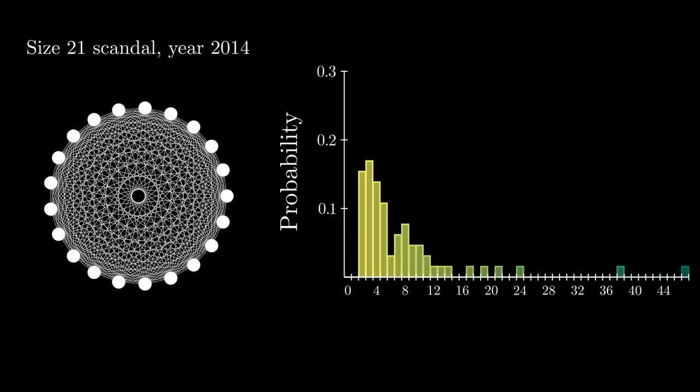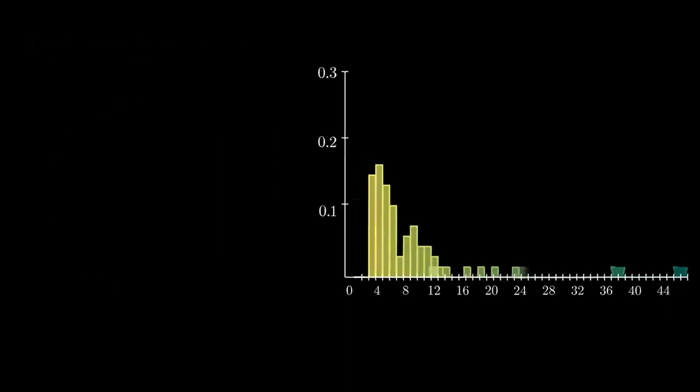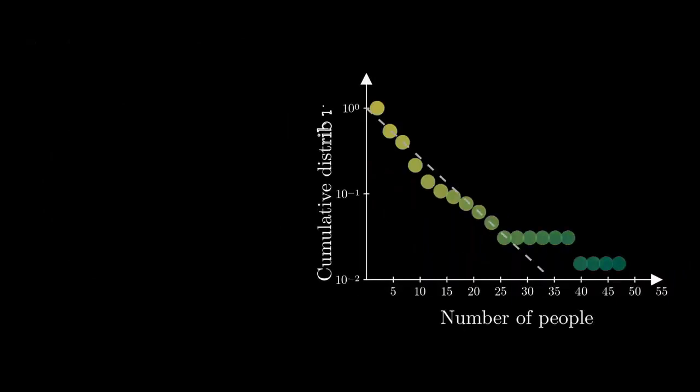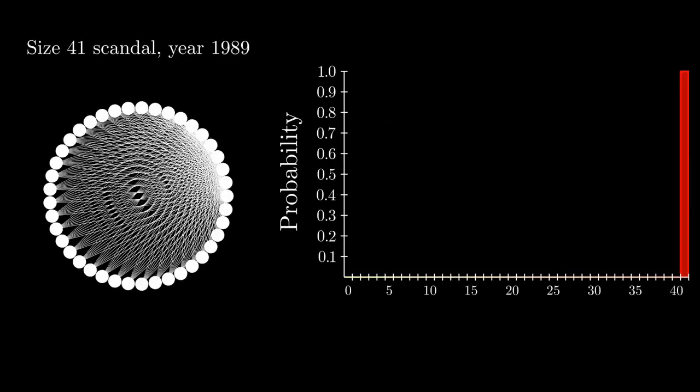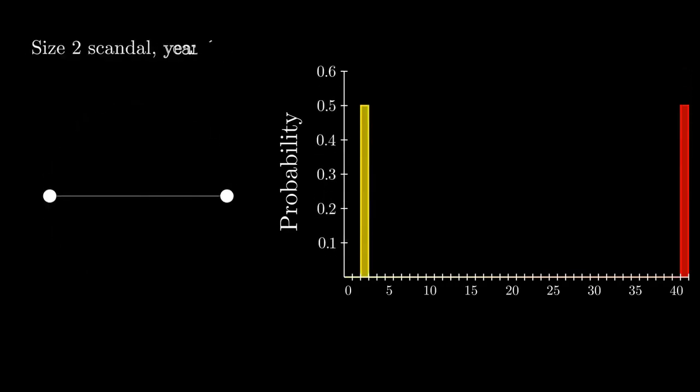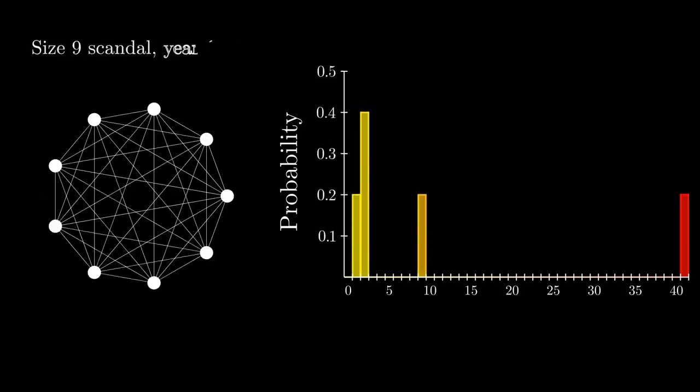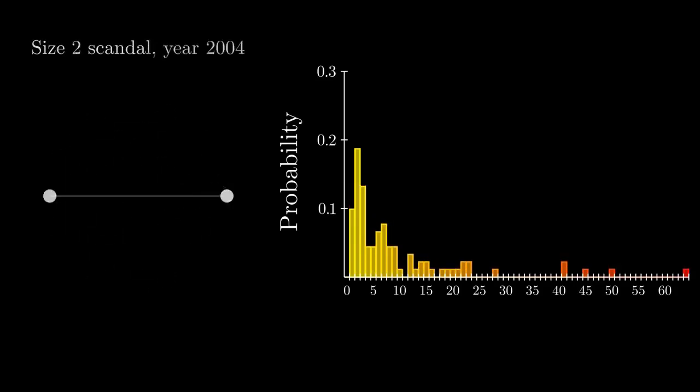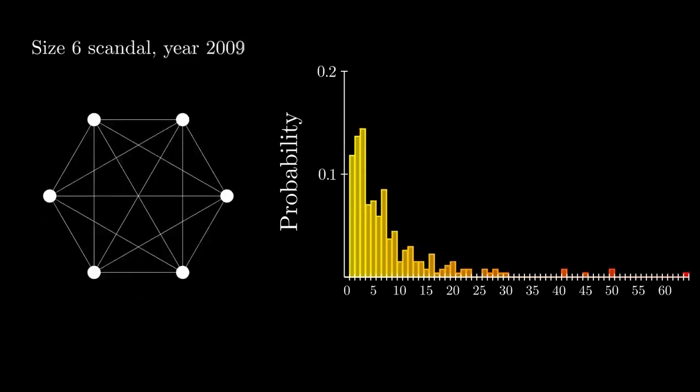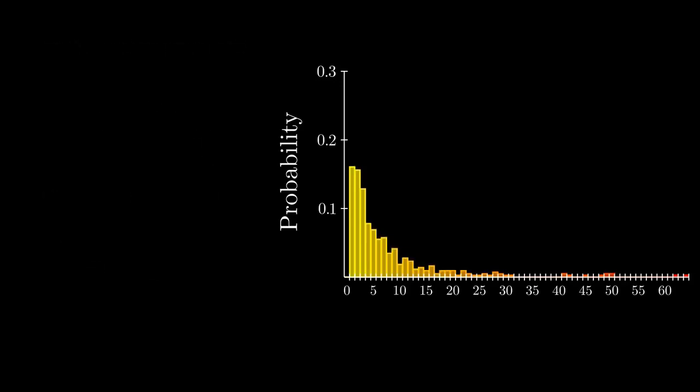Honestly, it was the size, or maybe more like the smallness of it all. We think of these huge scandals, right? Like it's got to be this massive conspiracy, tons of people involved. But this research found that the average scandal, in both Spain and Brazil, only involved about seven people. Seven people. I figured it'd be way more to pull off something big enough to make the news. It is counterintuitive, but it seems like smaller groups are actually behind a lot of this stuff.